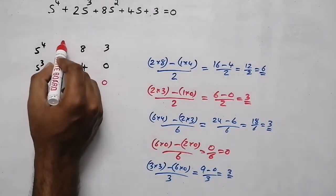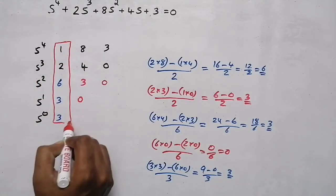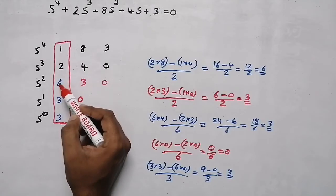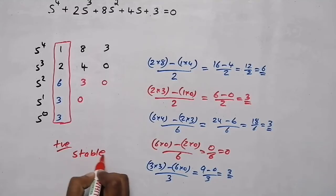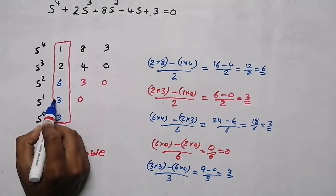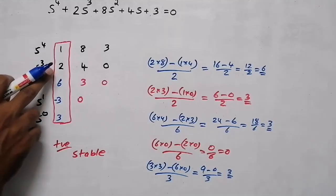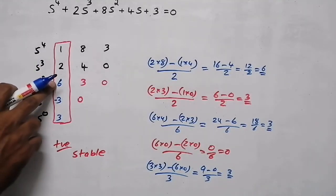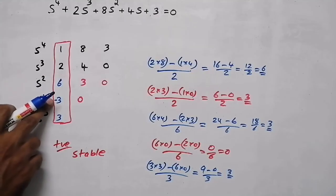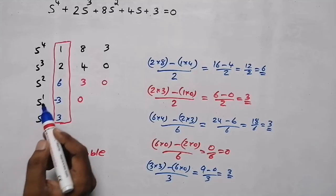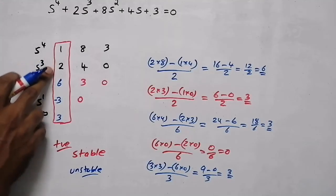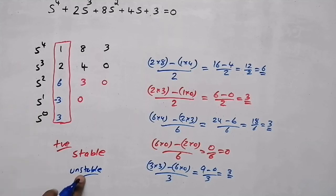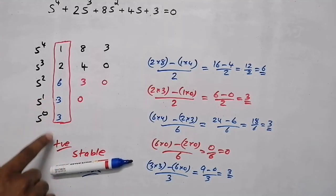Now, in order to determine stability, we check the first column. All the elements are positive numbers, so our system is a stable system. If there were a negative value in the first column, a sign change would occur — for example, positive to negative, then negative to positive would give two sign changes, making the system unstable. If any element in the first column is negative, the system is unstable. In this question, all elements are positive, therefore our system is a stable system.